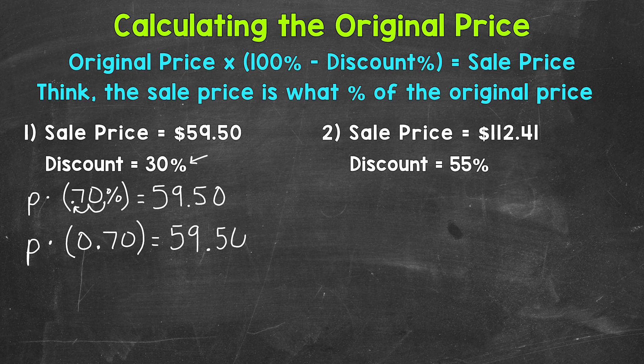So we have a one step equation here. We need to isolate our variable here. So we have P times 0.70. What's the opposite of multiplication? Well, division. So we need to divide that side by 0.70. And that's going to cancel out our 0.70 and isolate our variable. Now, whatever we do to one side, we have to do to the other in order to keep our equation balanced.